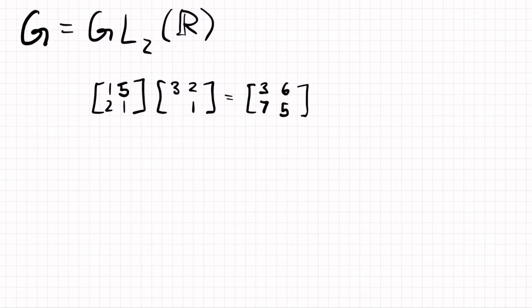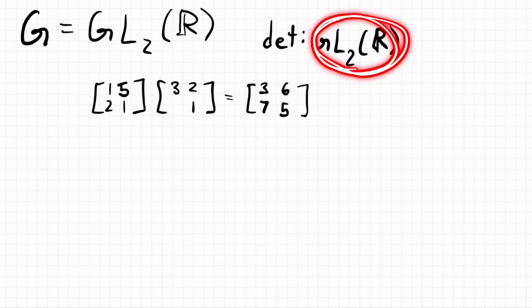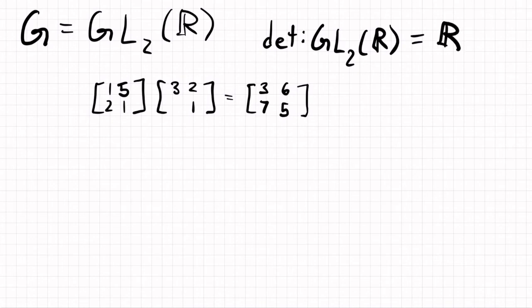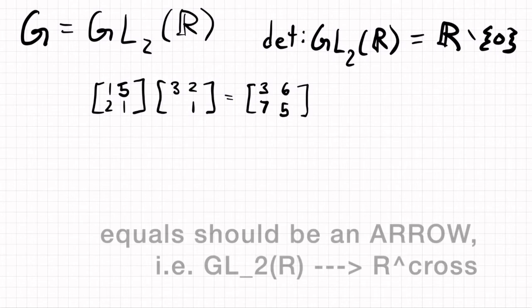And I want to consider the homomorphism determinant. So determinant is a homomorphism from GL2R, and then the determinant gives me a number. And because the general linear group is invertible matrices, it's R not including 0. And so I can also write that as R cross, which I will.